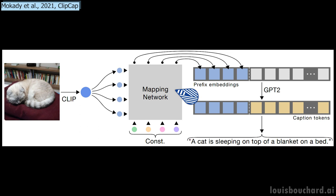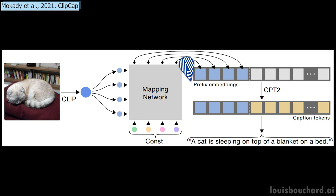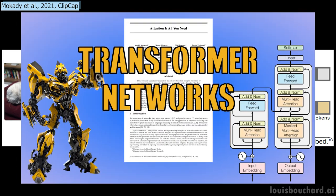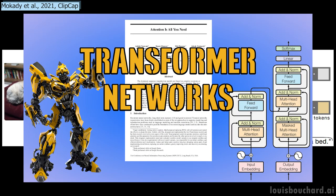You can see this as a third model, called a mapping network, with the sole responsibility of translating one's language into the other, which is still a challenging task. They tried with both a simple multilayer perceptron and a transformer architecture, confirming that the latter is more powerful to learn a meticulous set of embeddings that will be more appropriate for the task when using powerful pre-trained language models. If you are not familiar with transformers, you should take 5 minutes to watch the video I made covering them, as you will increasingly stumble upon this type of network in the near future.